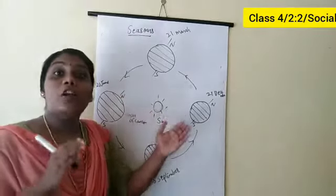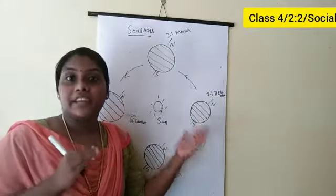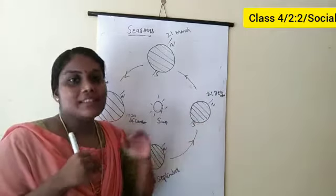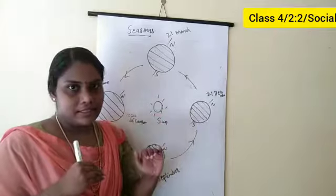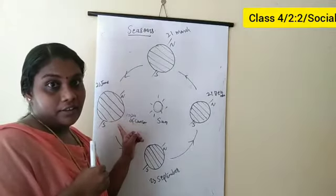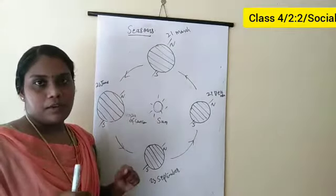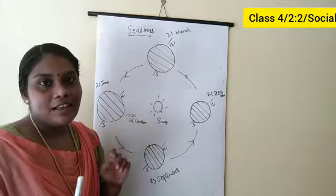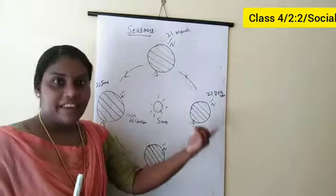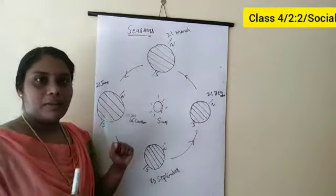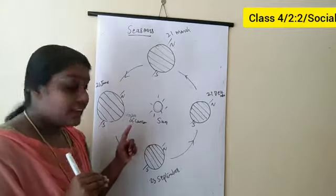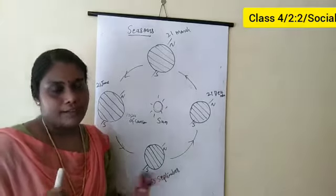June 21 is the longest day of the year in the northern hemisphere. Longest day means day is more, night is less. And it is the shortest day of the year in the southern hemisphere. So, June 21 is the longest day of the year in the northern hemisphere, and June 21 is the shortest day of the year in the southern hemisphere.